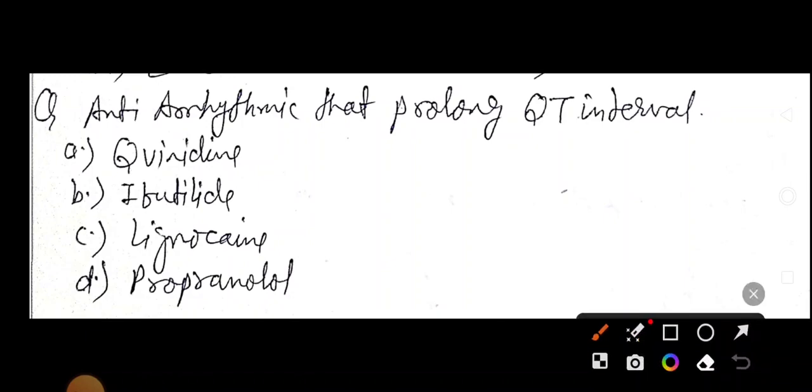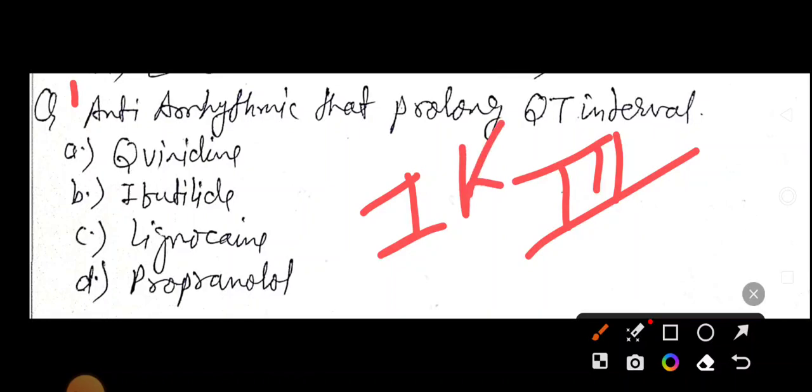Anti-arrhythmic that prolongs QT interval. Quinidine, ibutilide, lignocaine, propranolol. Which anti-arrhythmic prolongs QT interval? Remember, drug Class 1 anti-arrhythmic and Class 3. Class 3 is potassium channel blocker. How to remember? Mnemonics AIDS.